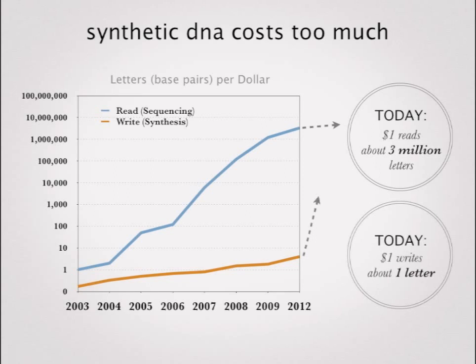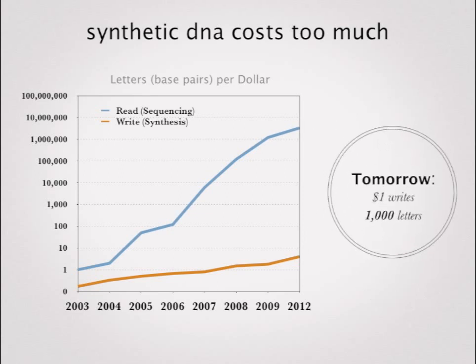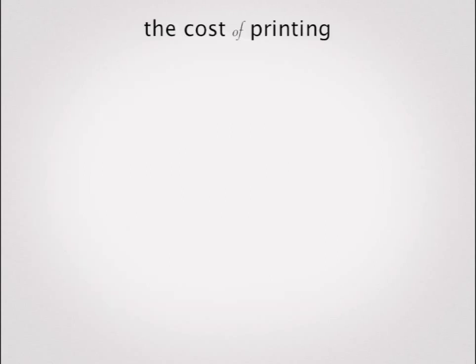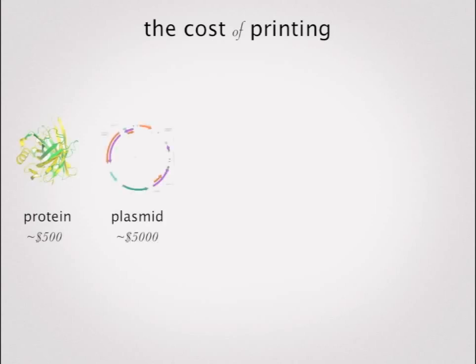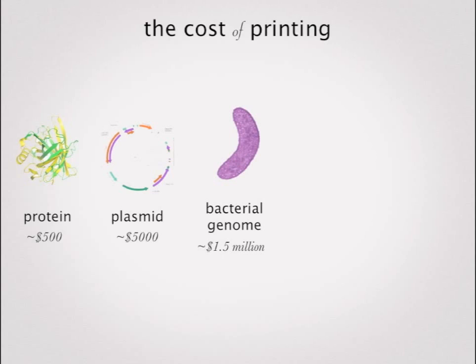There's a big disparity that we intend to address — first a thousand-fold improvement, then a million-fold improvement very quickly. The cost of doing things in biology: printing the DNA for a protein is about $500; for a plasmid, which is an executable program, it's about $5,000. If you want to synthesize the entire genome of a bacteria — about a million base pairs — it's over a million dollars.